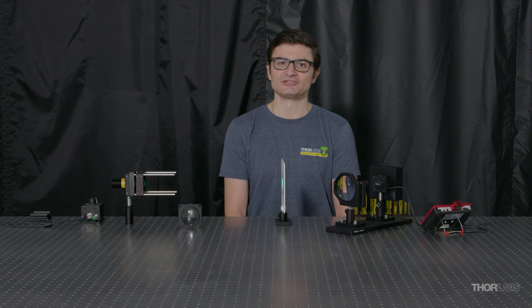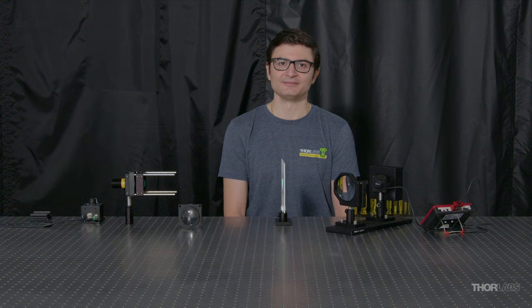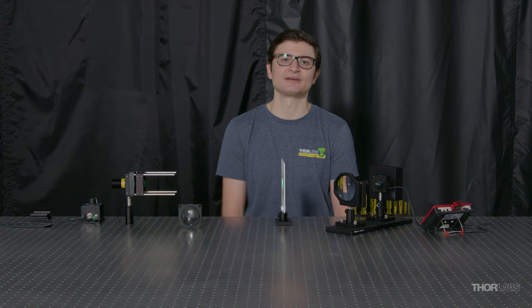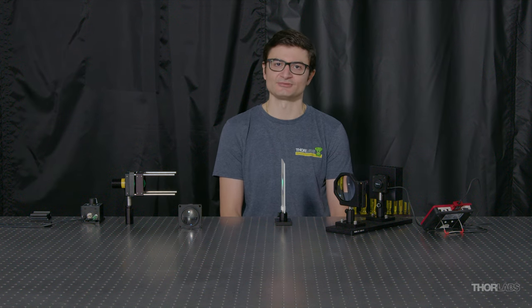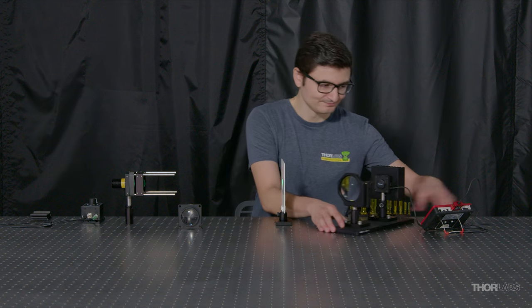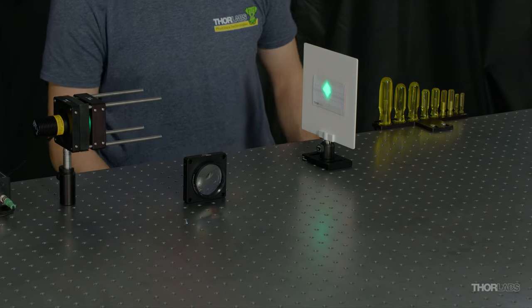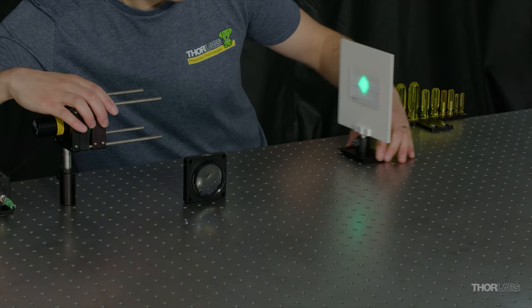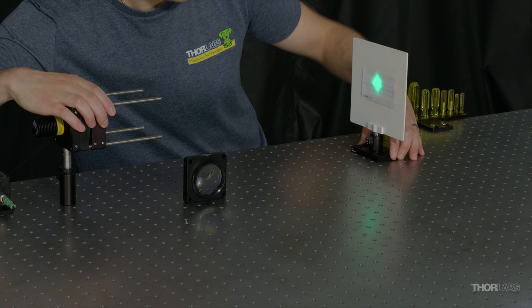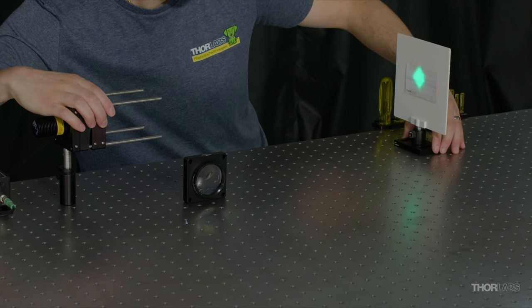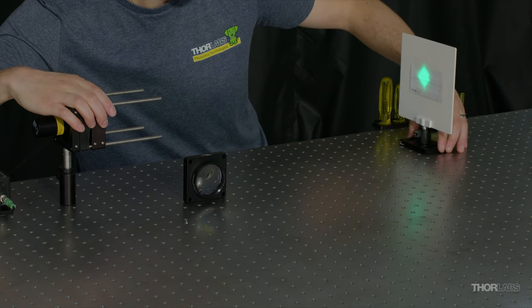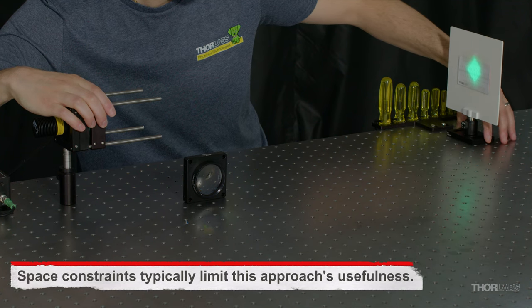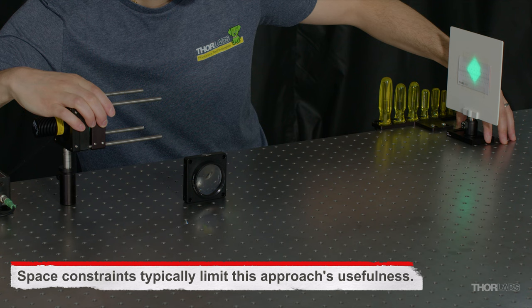I typically use an adjustable lens tube to perform this alignment, but today I'm using a cage system to better show the individual components and allow the system to remain unchanged when I switch lenses. Now that I see an image on the screen, I'll move my viewing screen further away from the source and adjust the lens to form another image. Iteratively pushing the image of the LED further away brings the alignment closer to producing a collimated beam, which can be thought of as forming an image an infinitely long distance away.